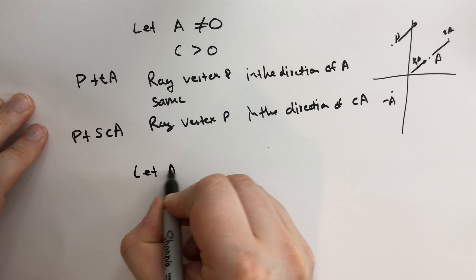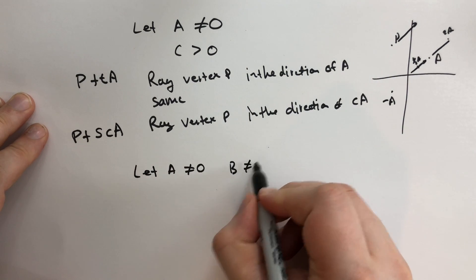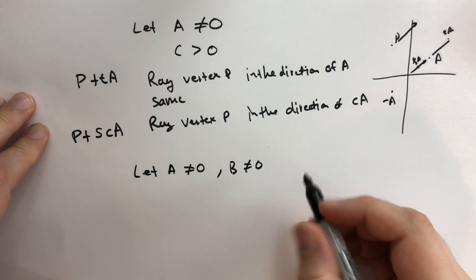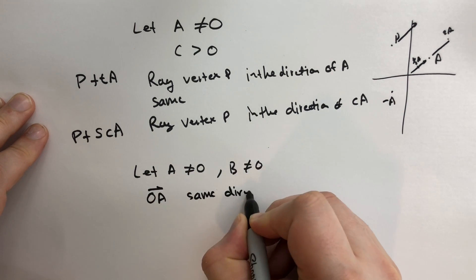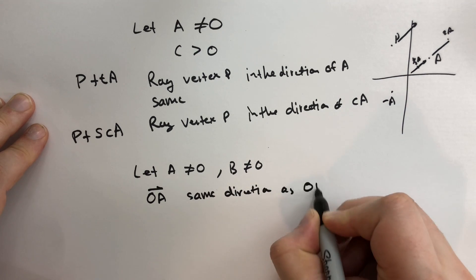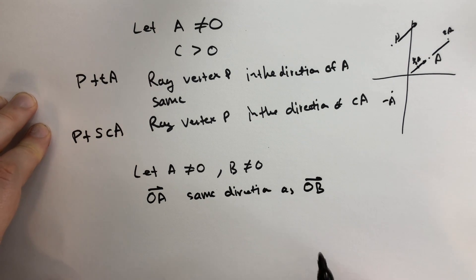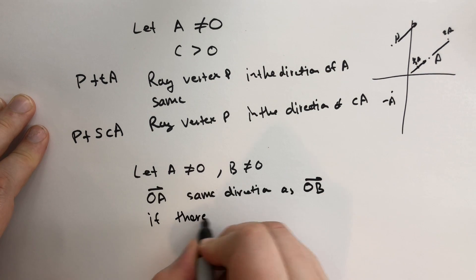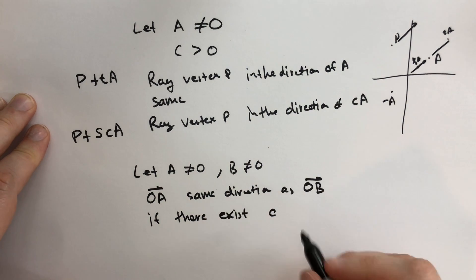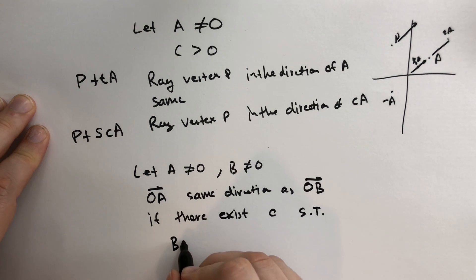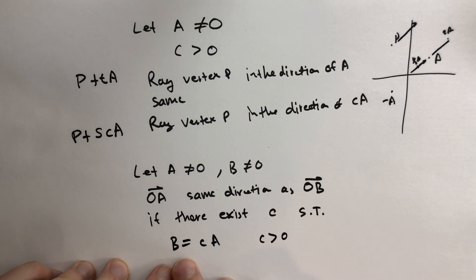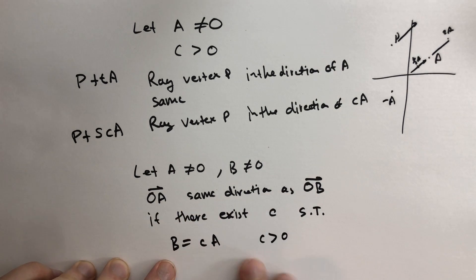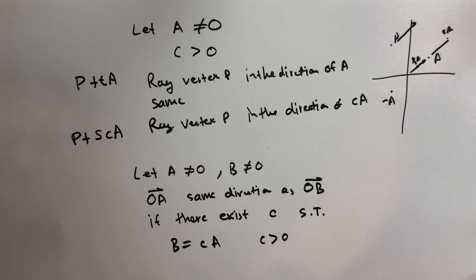Because of this remark, we're able to make a definition. Let A not equal to the origin and B not equal to the origin. We say that directed vectors OA and OB have the same direction if there exists a number C such that B equals C times A and C is greater than zero. So if we can find a positive multiple of A that equals B, then OA and OB have the same direction. Their direction is not different — just the size of them is different.